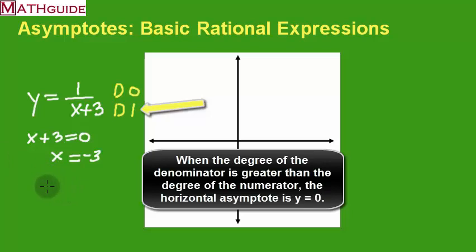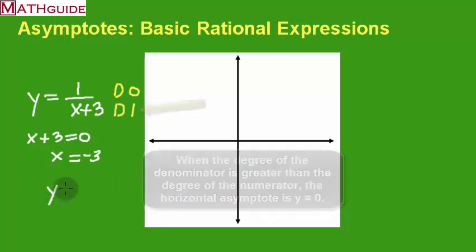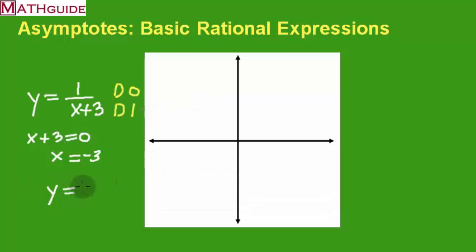It's simply y, because it's horizontal. It's y equals 0, and it will always be the case. As long as this denominator has a greater degree, it will always be y equals 0.